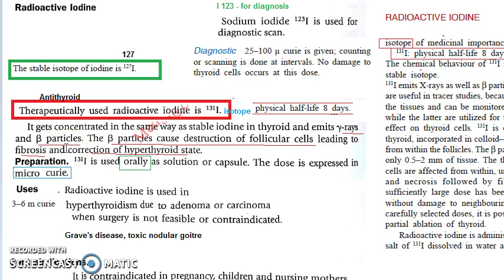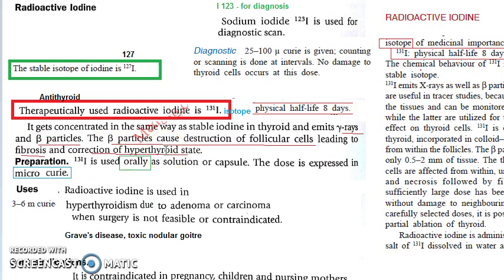The words are very important here — don't say gamma particle, say gamma rays, because they don't have a charge. Gamma rays and beta particles are emitted. These beta particles will destroy the follicular cells. This will lead to fibrosis of the gland, and this will lead to correction of the hyperthyroid state.